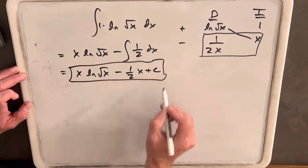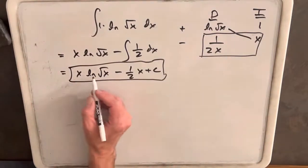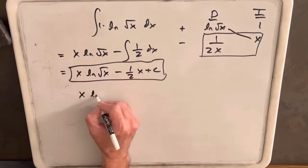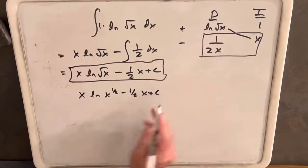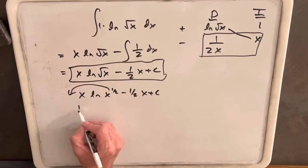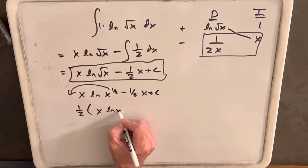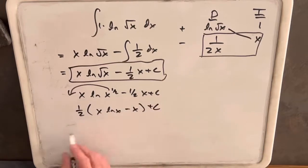One interesting point, I looked this up on, I think I put this in the Wolfram Alpha, and they did this a different way, because this can be also written as x ln x 1 half minus 1 half x plus c. Then you can bring the half to the front and factor out the half, and you'll have 1 half x ln x minus x plus c. So that's how they have it on Wolfram Alpha, I think either way is fine.